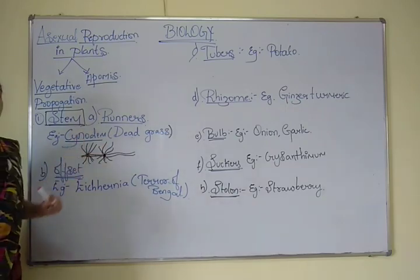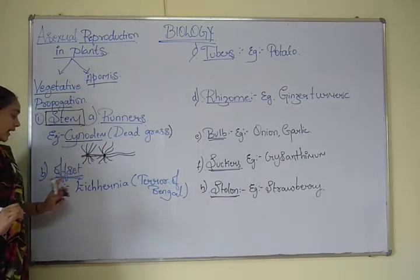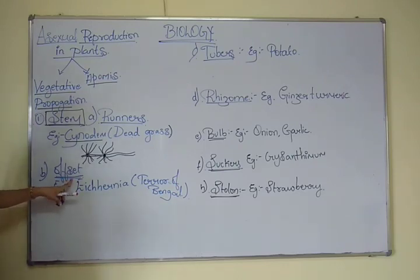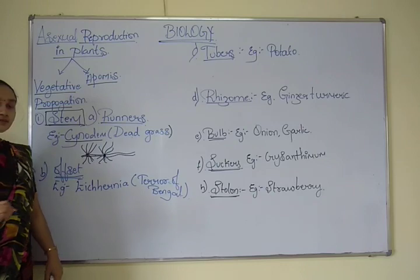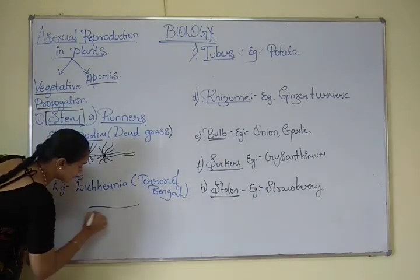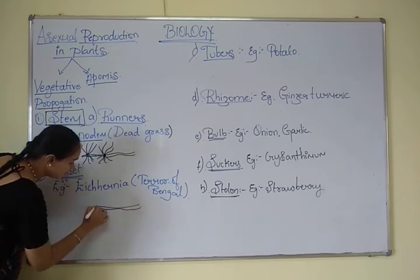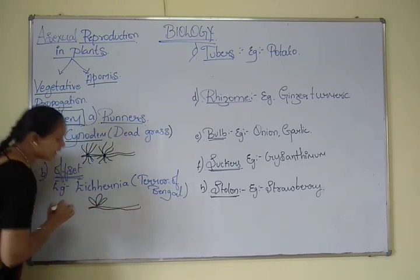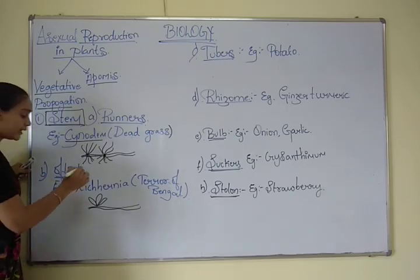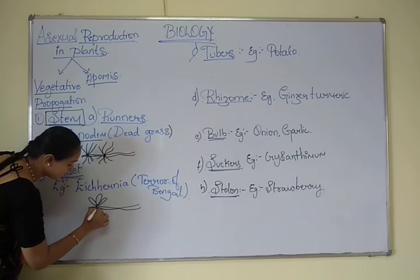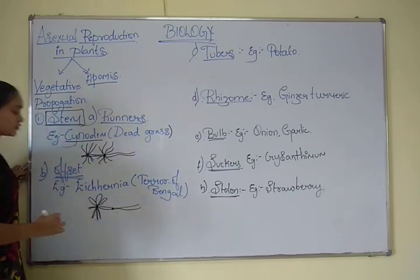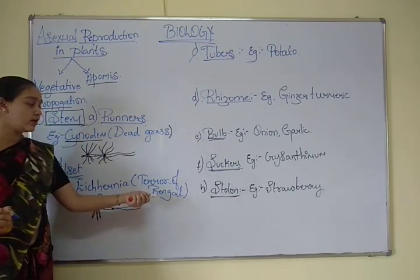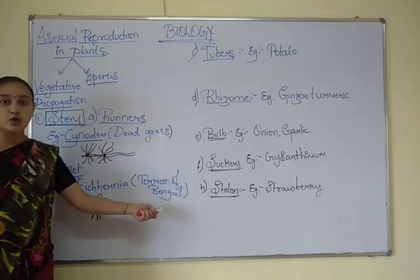The example for Cynodon is commonly called as headgrass. The next type is offset, and the example is Eichhornia, commonly called as the terror of Bengal. It also has a stem with leaflet-like structures and roots, having nodes and internodes. Eichhornia is a freshwater species.